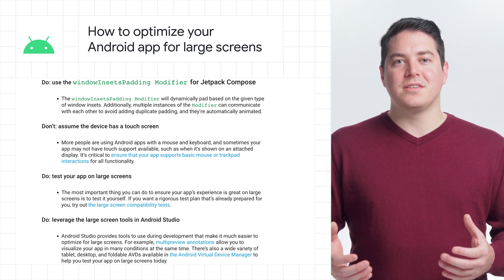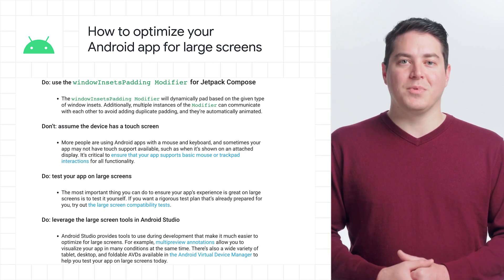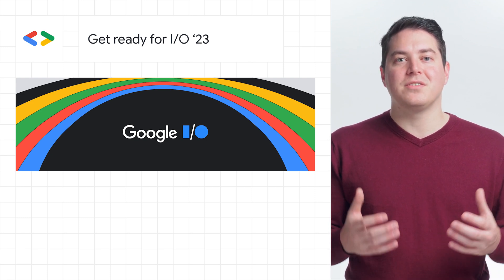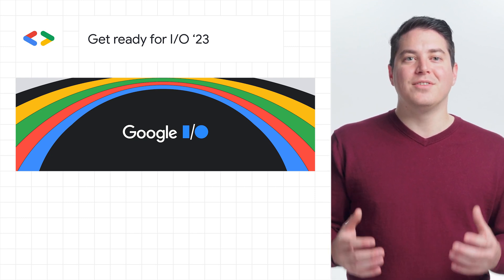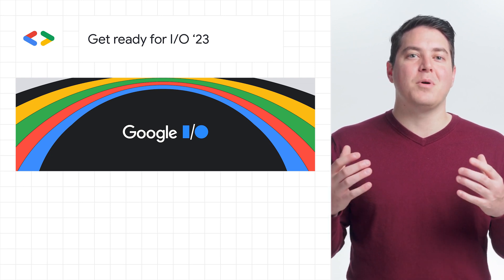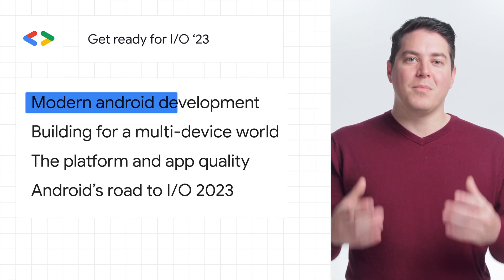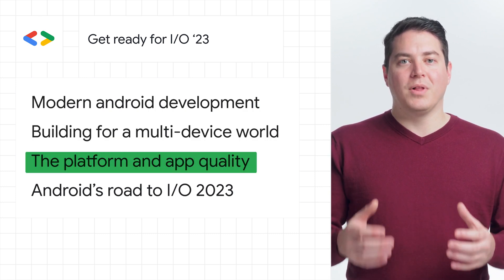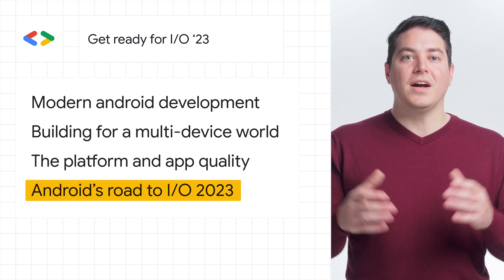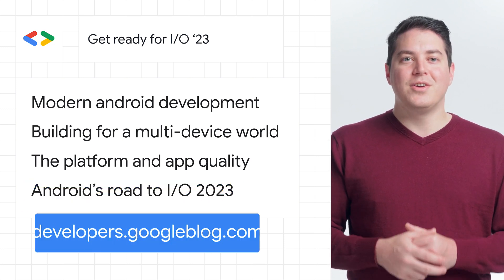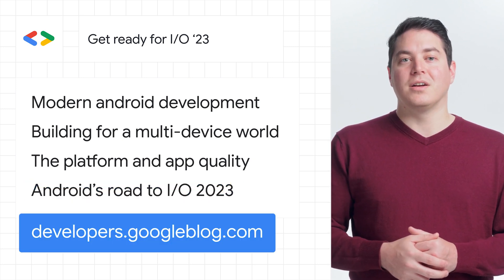You can read more about these optimizations on the Android Developers blog. And finally, you can start getting ready for Google I/O 2023 by starting to plan your sessions and taking a look at some of Android's favorite moments. Stay tuned for some amazing content, such as modern Android development, building for a multi-device world, the platform and app quality, and Android's road to I/O 2023. You can learn more at developers.googleblog.com.